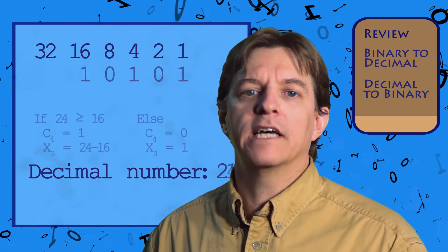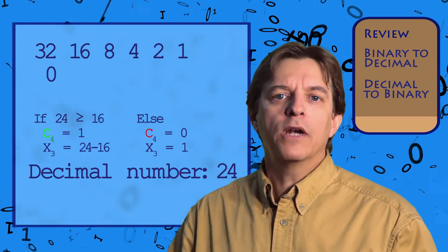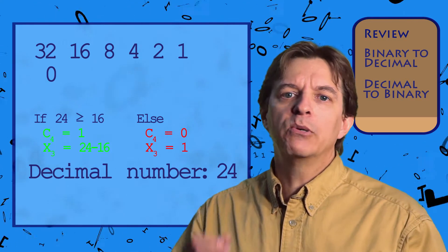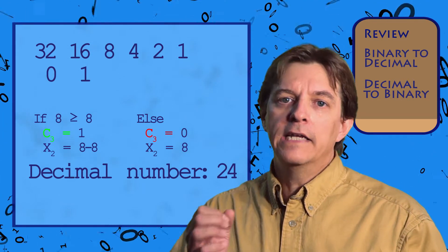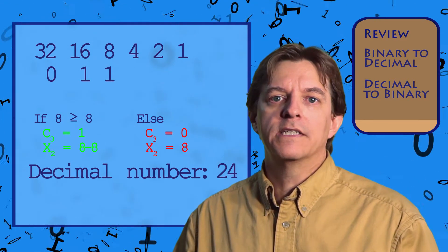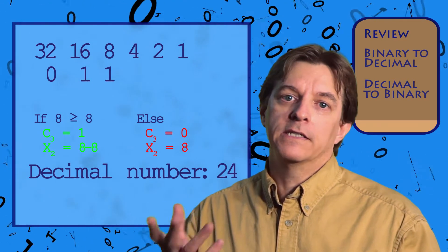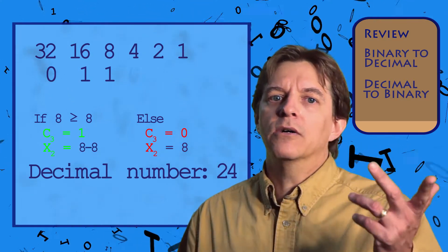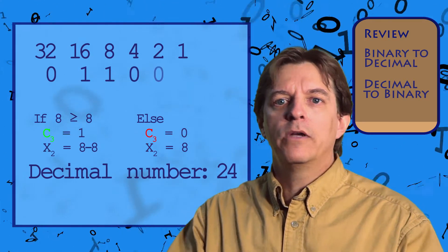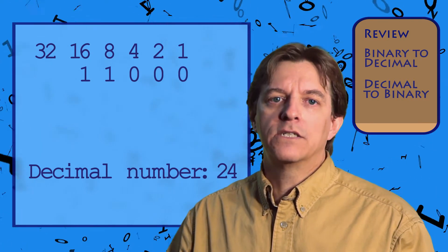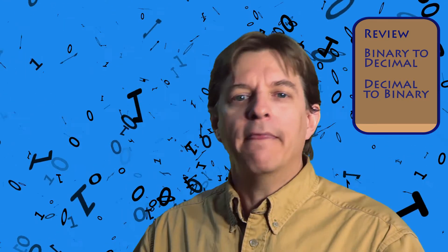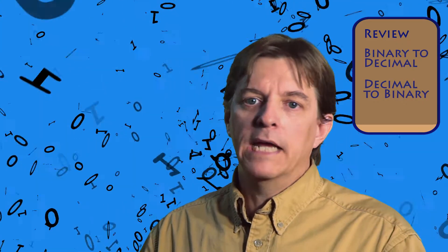Let's try 24 decimal as another example. 24 is greater than 16, so we set a 1 below the 16, subtract 16 from 24, leaving us 8. 8 is equal to 8, so set a 1 below the 8 and subtract 8, leaving us 0. Since we know 0 is less than all the other columns, we can just set them all to 0 and be done. This leaves us 1, 1, 0, 0, 0 binary. And that's all there is to convert between binary and decimal.